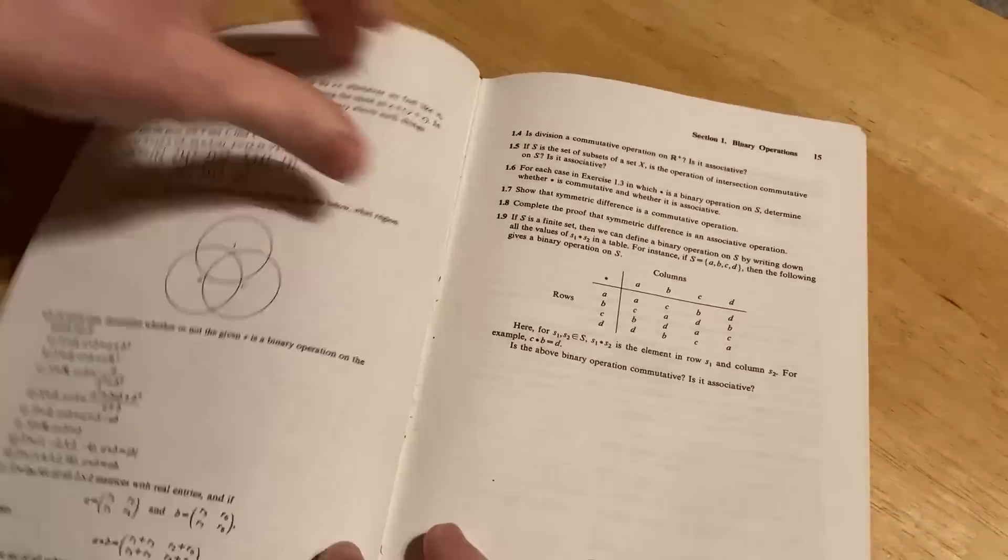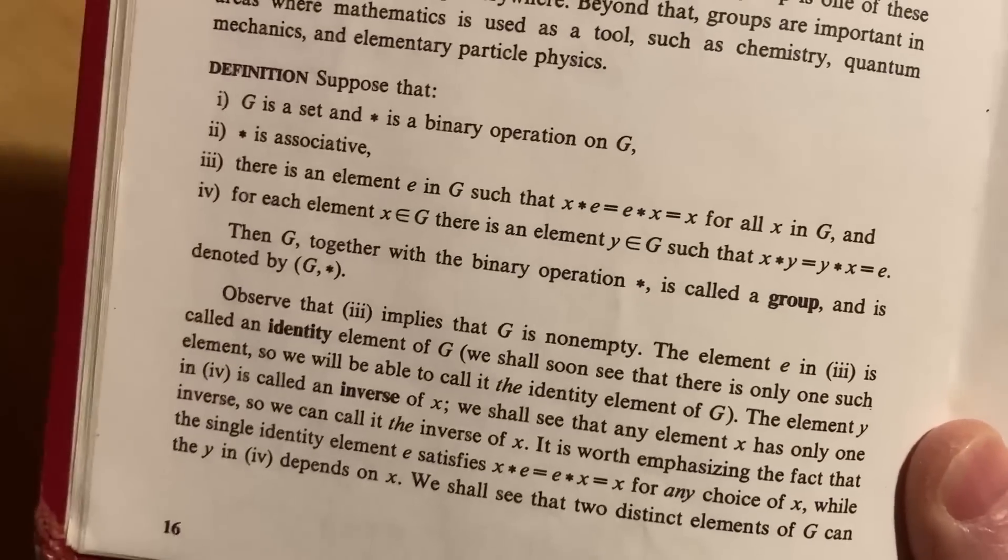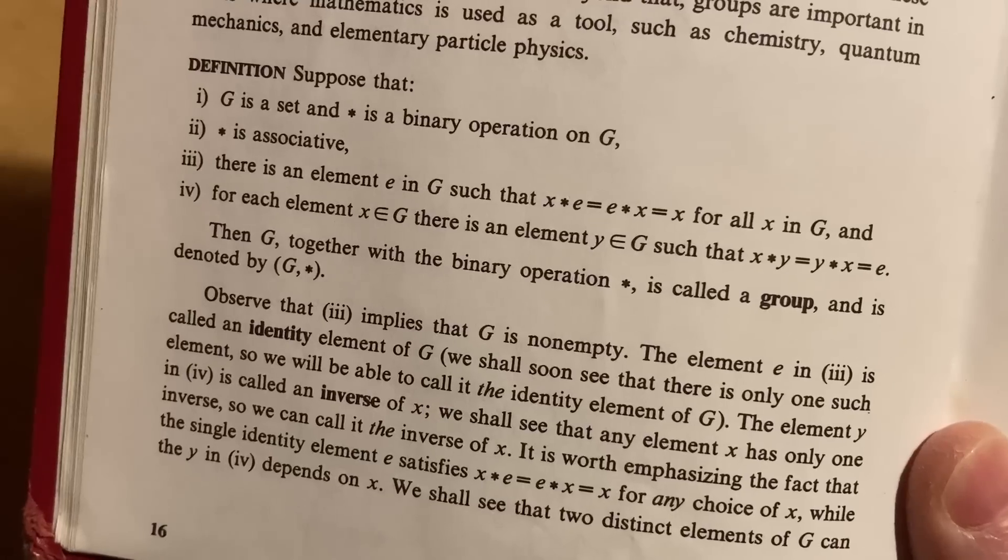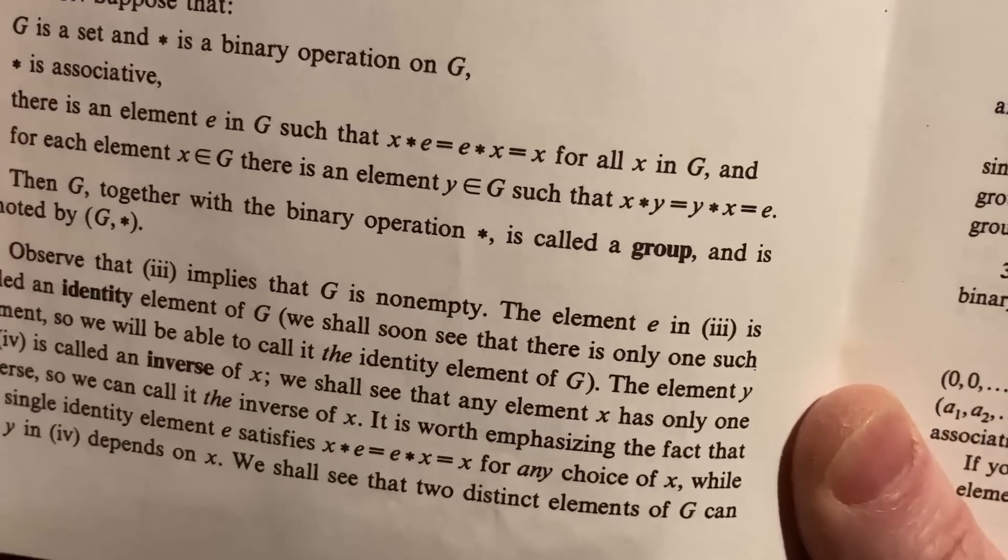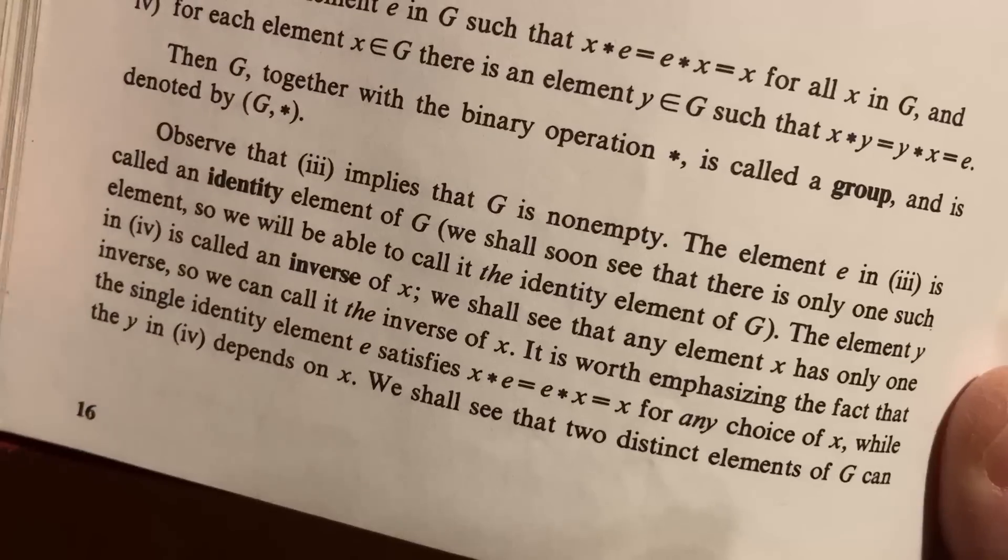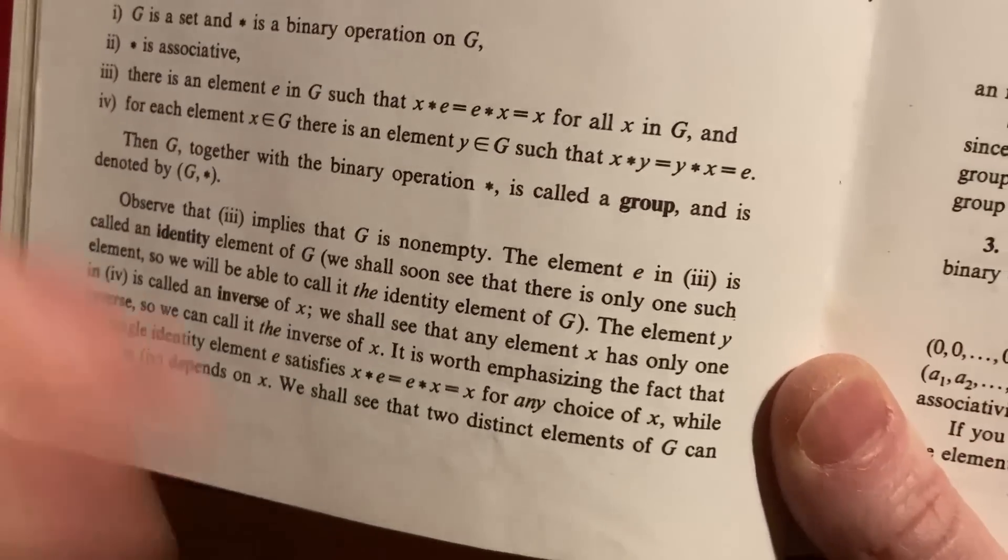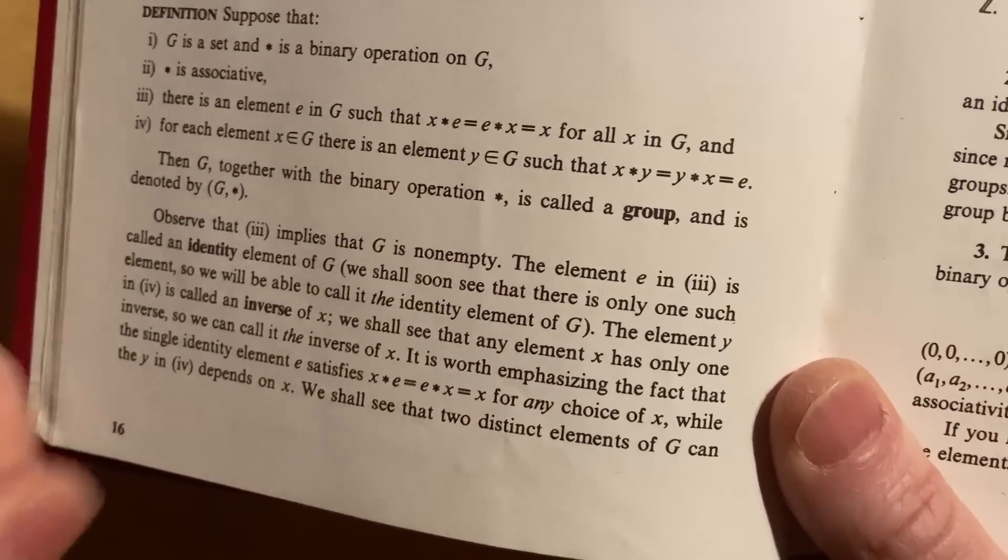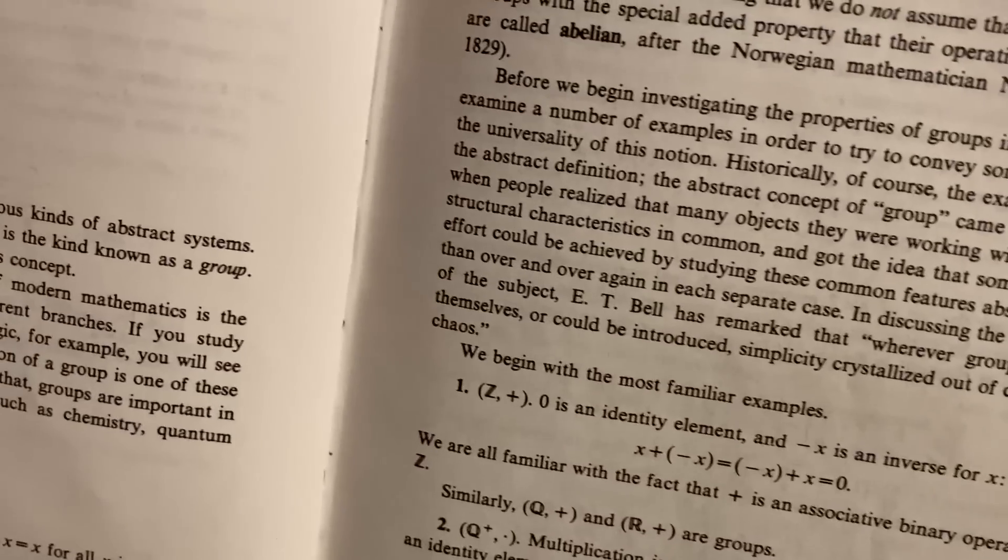And that leads into groups. So a group is basically a set with one of these binary operations, and there's extra assumptions. The first assumption is that the set has associativity. So you have your set with the binary operation and then you have associativity. Then you have to have an identity element here. It tells you there is an element e in G such that x ★ e = e ★ x = x for all x in G. And the next one is inverses - for each element x in G, there is an element y in G such that x ★ y = y ★ x = e. Eventually you stop writing the star, but it's kind of nice to write it when you're first learning. You're really aware of what's going on.